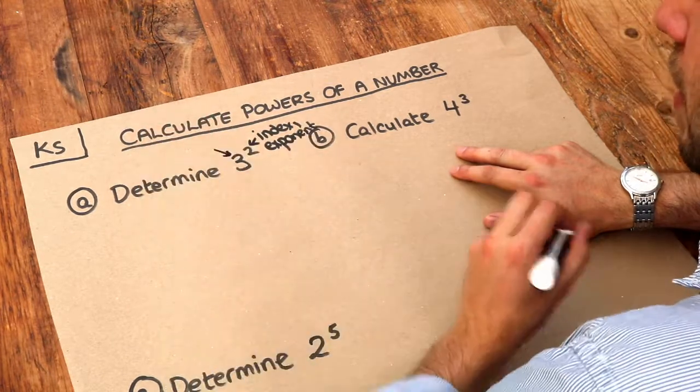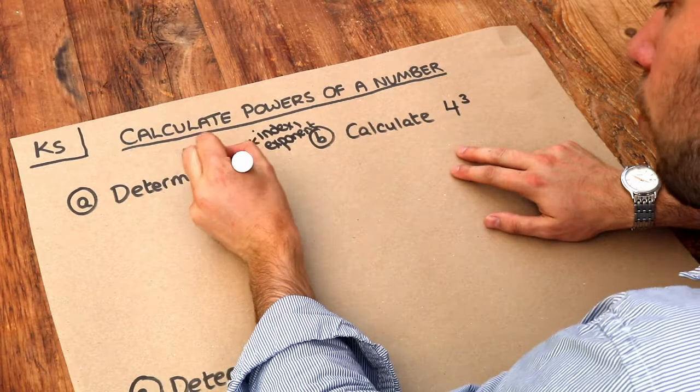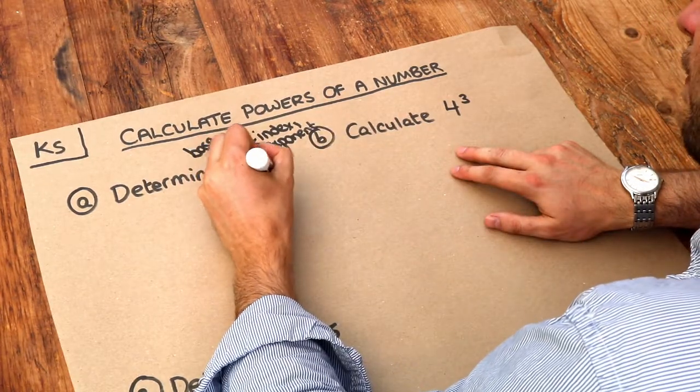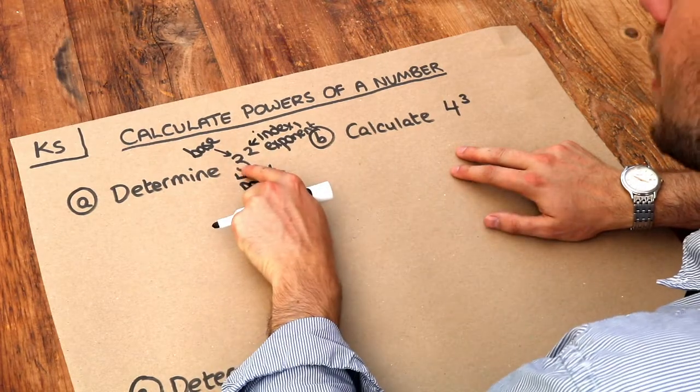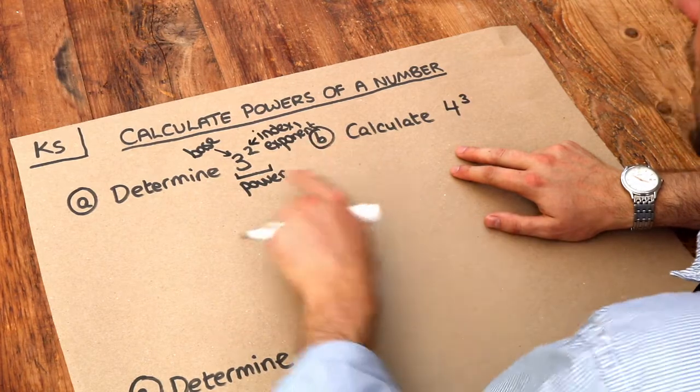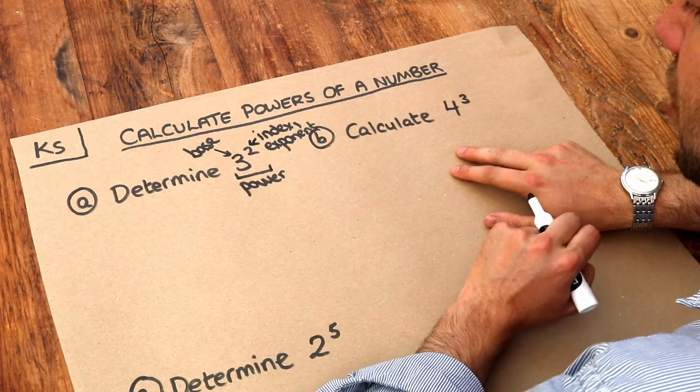And this big number is known as the base. And the whole thing in its entirety is known as a power. And we would say that as 3 to the power of 2. We could also say this as 3 squared because that index, that exponent there is 2.